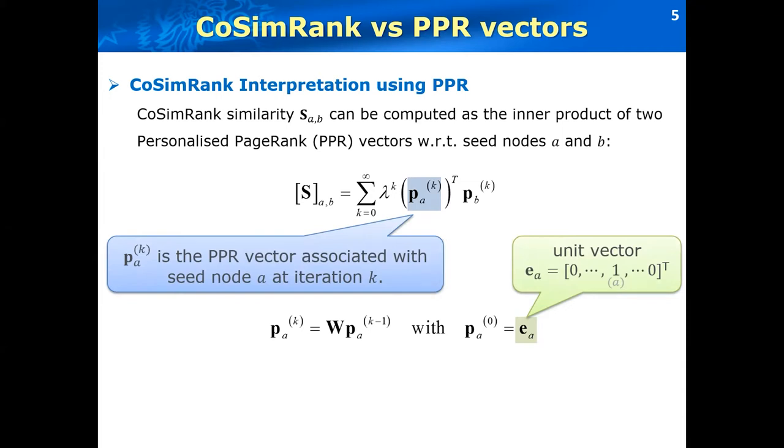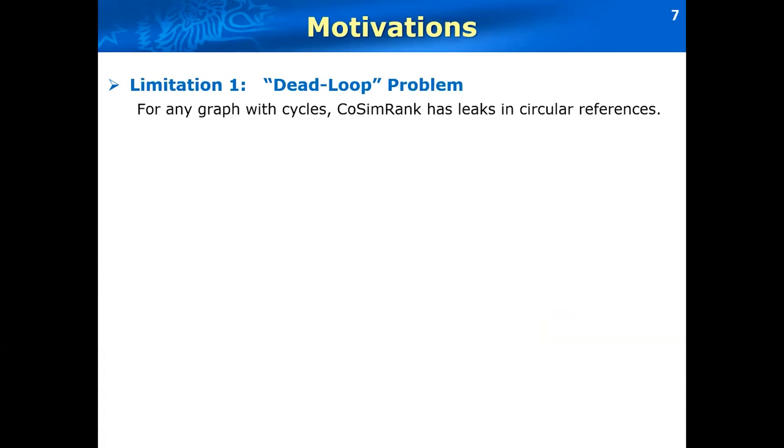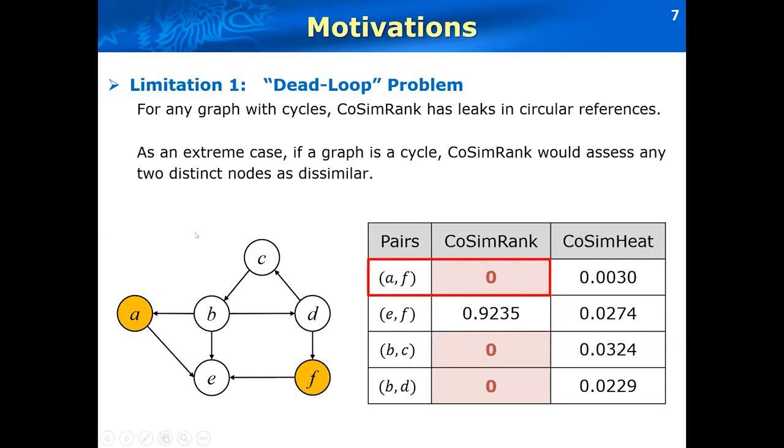However, existing work on COSIM rank suffers from two limitations. The first limitation is the dead loop problem of the COSIM rank. That is, for any networks with cycles, COSIM rank similarity has leakages in circular references. Let's look at this toy example. We can see there is a circular reference here from B, D, C. When we evaluate the similarity between the node A and F, we can imagine that there are two random surfers starting at A and F. Then they are going against the linked edges and will go to B and D. The similarity of B and D can be computed by their parent B and C. So on and so forth. We can see the two random surfers will chase each other endlessly and will never meet at the same node. As a result, the similarity pairs of A and F will be evaluated as zeros.